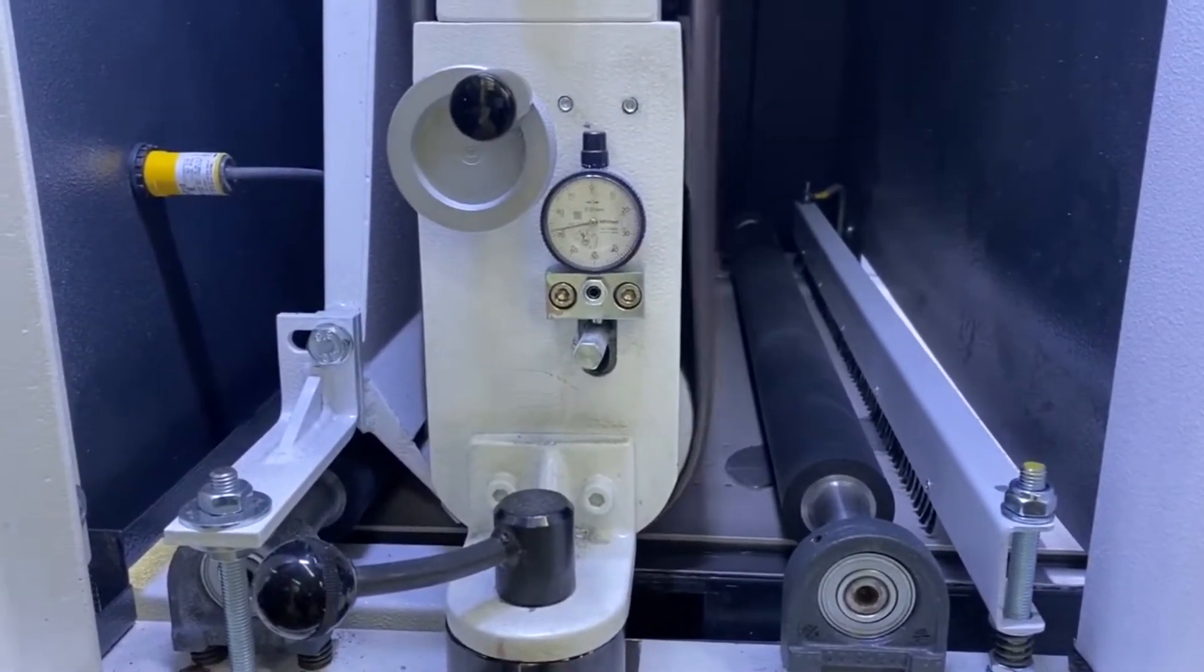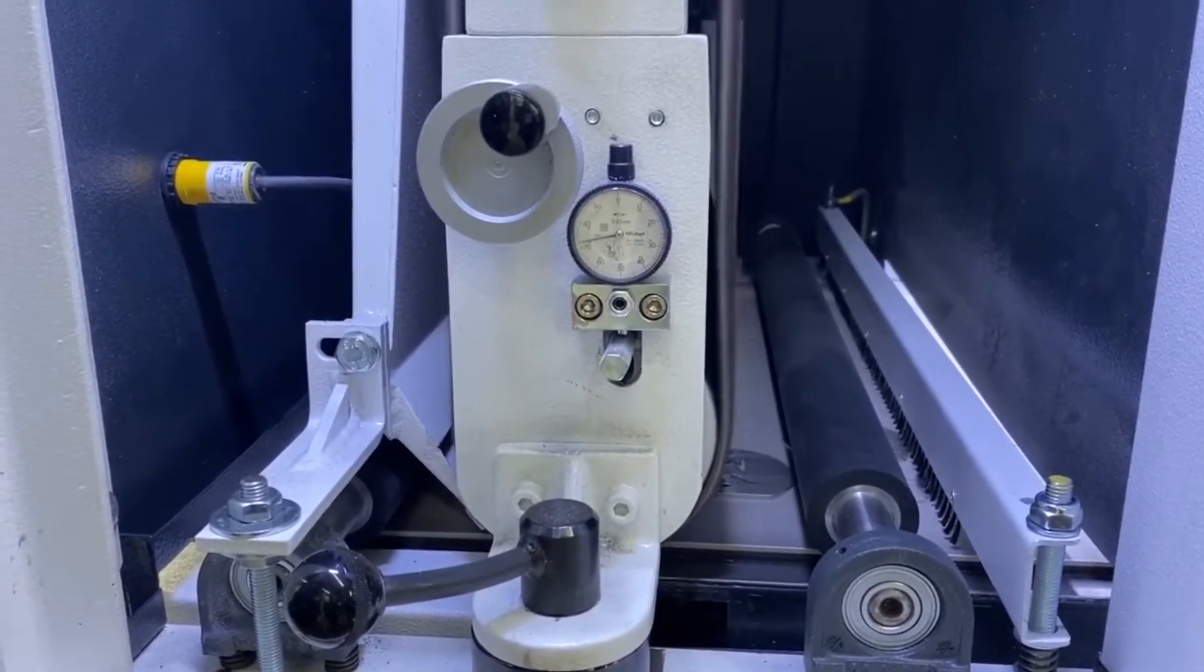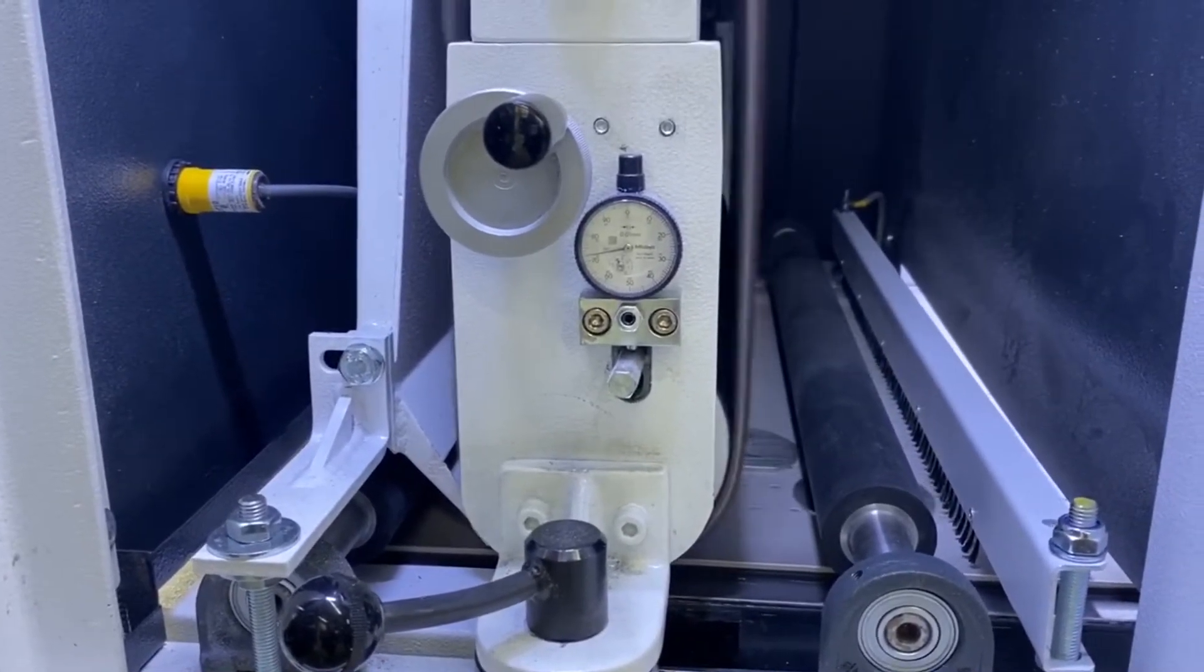We now have a scotch bright belt on it. Of course if you want to have a deeper finish you can put a normal grinding belt on it.